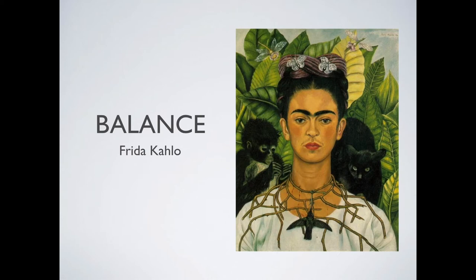In art, we don't mean that one part of the painting literally weighs more than another, but instead we mean visual weight — the space it takes up visually. Drawing that imaginary line down the middle of Frida's painting, we notice it's not perfectly symmetrical, but there are the same number of things on either side: the monkey on one side versus the cat on the other, one butterfly on each side, the dragonfly the same way, and the leaves in the background. So while the two sides are not mirror images, they are pretty equal and therefore balanced.